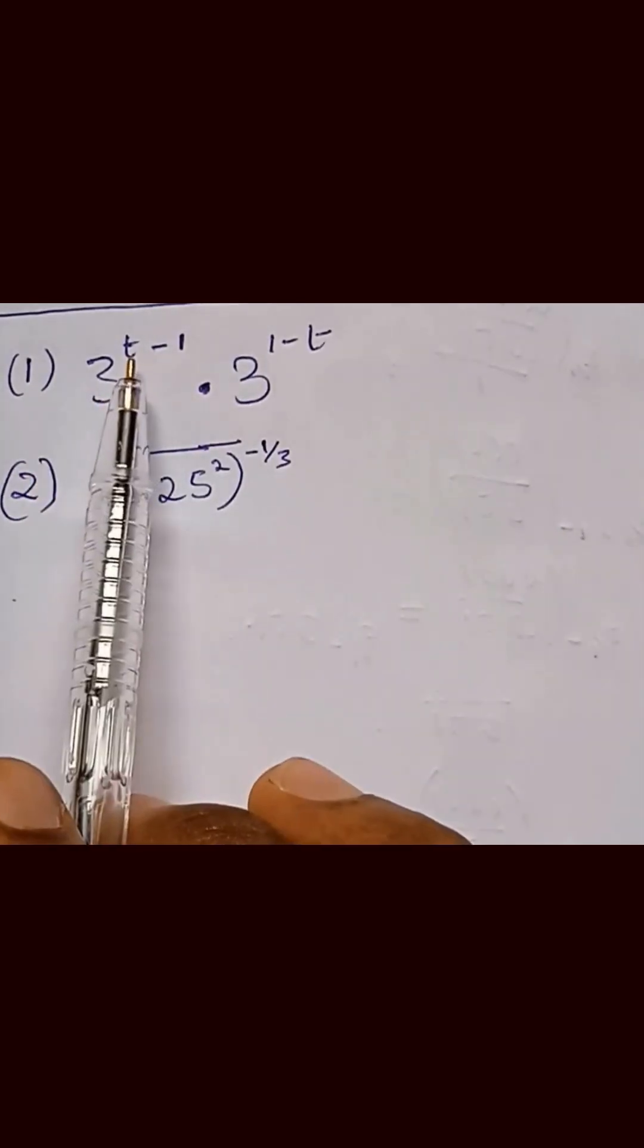Here we are going to simplify 3 raised to the power t minus 1 multiplied by 3 raised to the power 1 minus t.